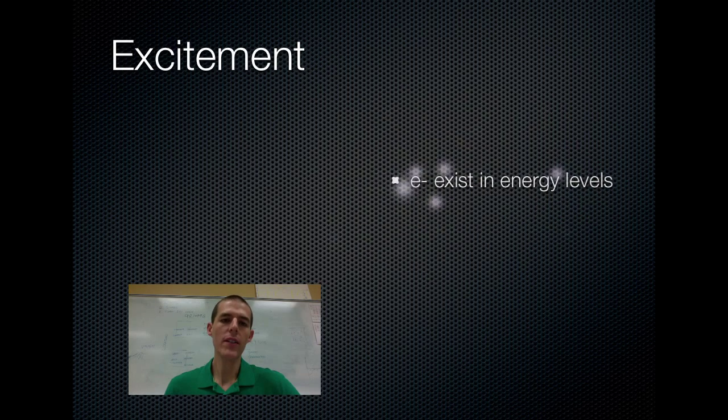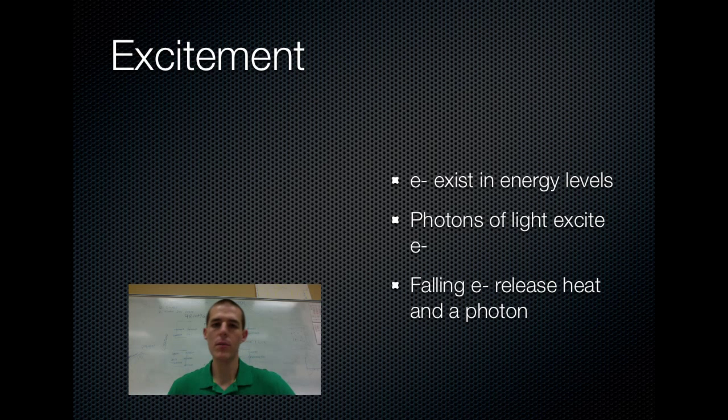So this all relates to the excitement of electrons. And a couple basic things about electrons, I'm going to show you a diagram on the next slide. Electrons exist in energy levels. If you remember from a basic science class, the structure of an atom is such that you've got a nucleus in the middle and then there's like tracks outside that nucleus. Each track holds a different number of electrons. Each track represents a different energy level for those electrons.